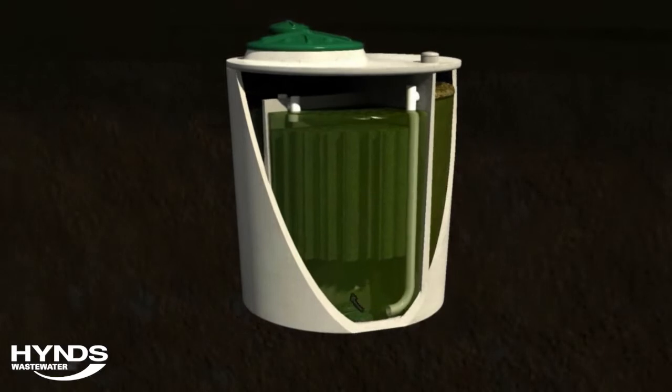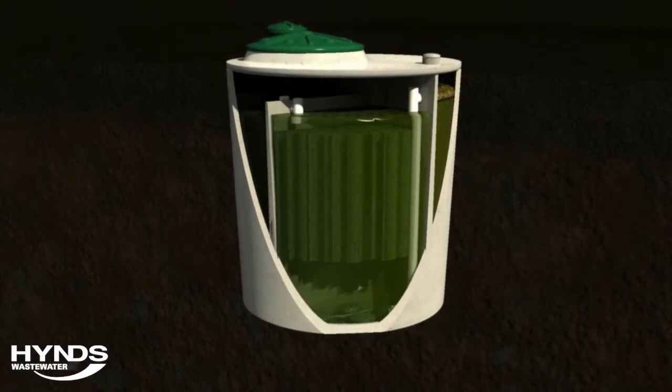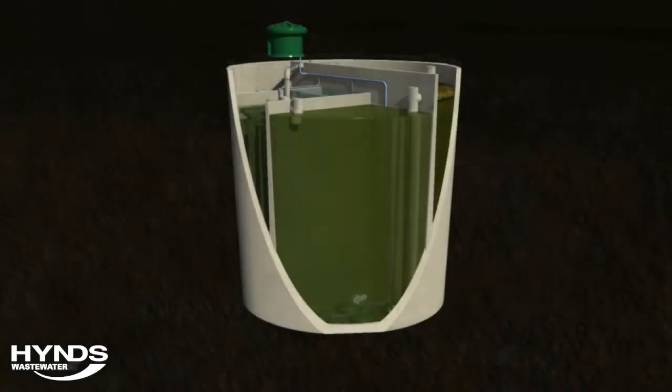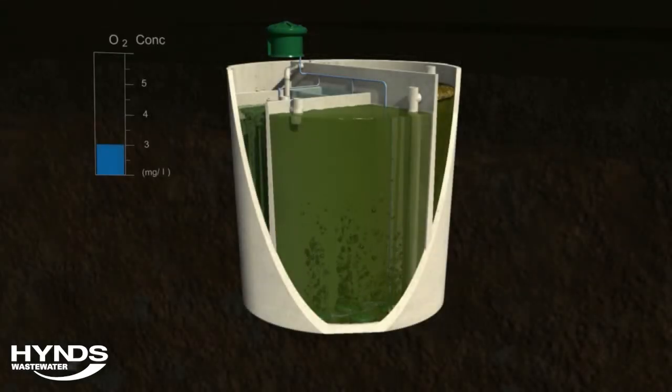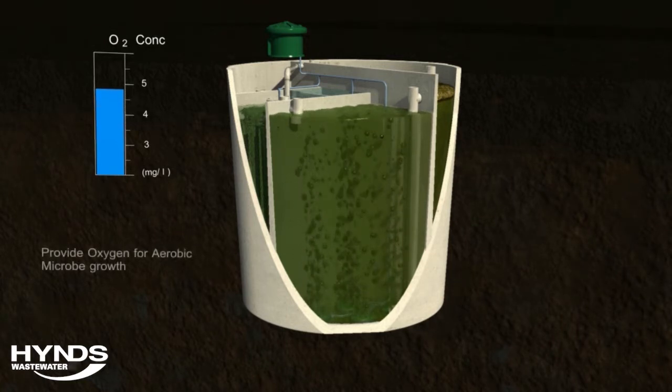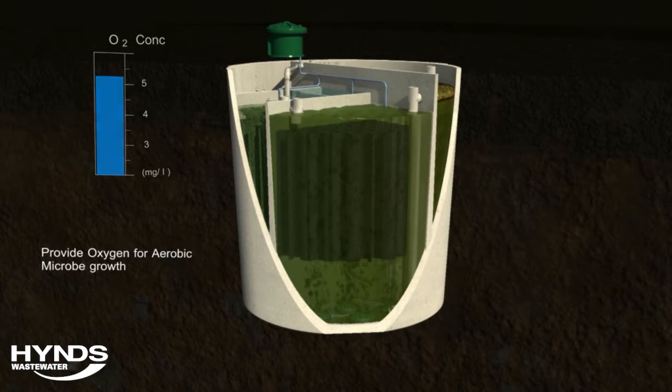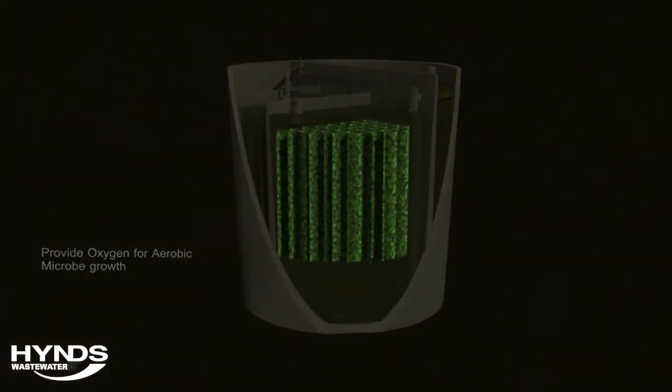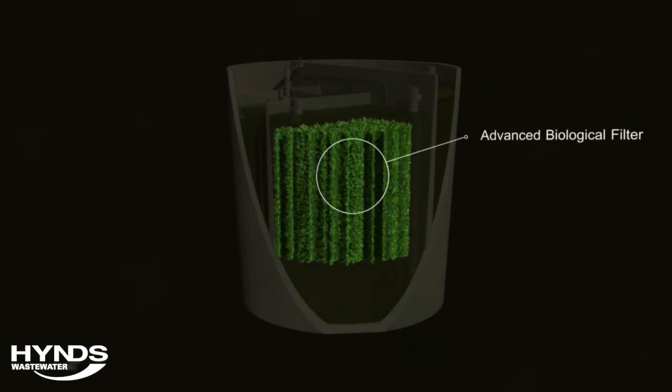The water then enters the secondary stage of the treatment process. A blower located on top of the tank forces air into the wastewater through specialized fine-bubble air diffusers. This oxygen in the air is absorbed by the water, creating an environment that is suitable for aerobic microbe growth. Filter media fills this chamber and the large surface area creates a perfect place for the microbes to grow.